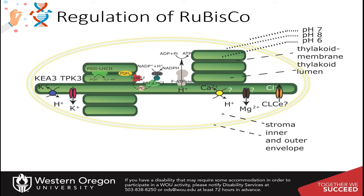While the Calvin cycle can occur in the dark and is not dependent on light for those chemical reactions, it is still more efficient when the light reactions are actively taking place to produce ATP and NADPH, as well as promoting the translocation of magnesium ions into the stroma.